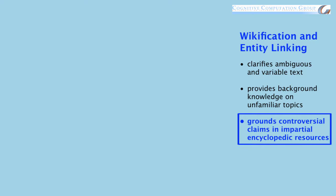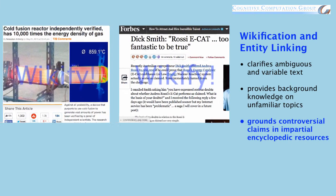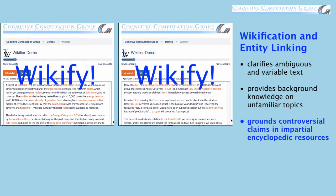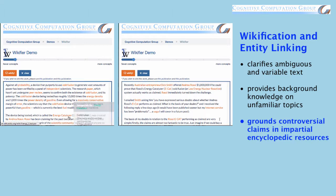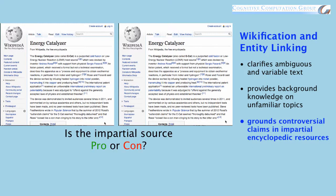By providing this background knowledge, the Wikifier can also help ground controversial claims in impartial resources. Some articles report favorably on cold fusion technologies, while others are more skeptical. When run through the Wikifier, key terms across multiple documents are grounded in the same article in Wikipedia, giving the reader access to impartial information with which to evaluate the claims in partisan sources.